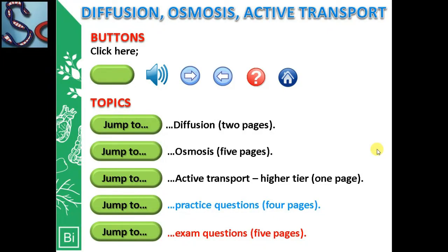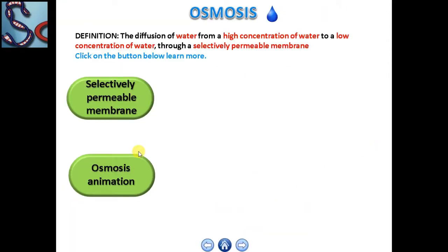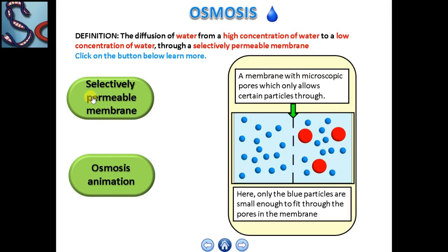The definition of osmosis: the diffusion of water from a higher concentration of water to a lower concentration of water through a selectively permeable membrane is called osmosis. A membrane with microscopic pores inside it which allow only certain particles through it is called a selectively permeable membrane.